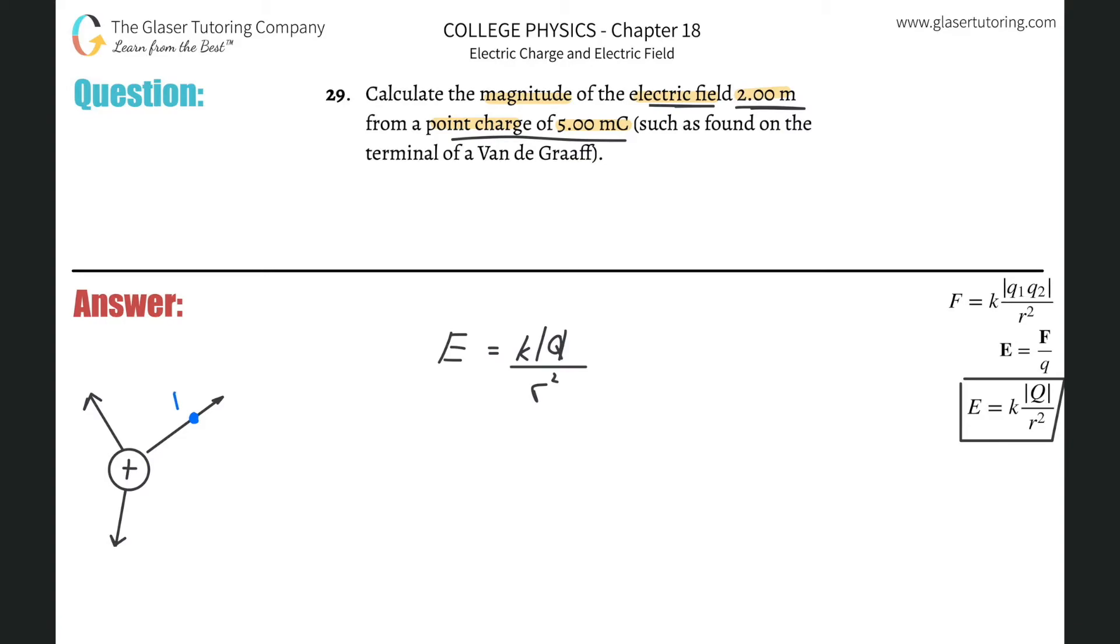The direction you get by understanding that field lines emanate away from the positive charge. But the magnitude of the electric field is a function of the charge value and also a function of the distance from that charge. That's basically all it is.